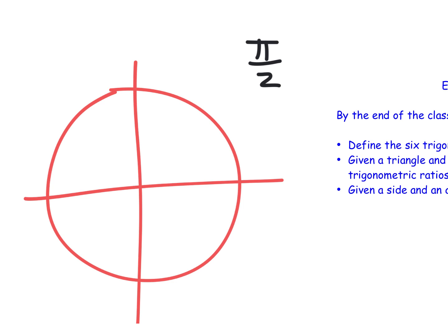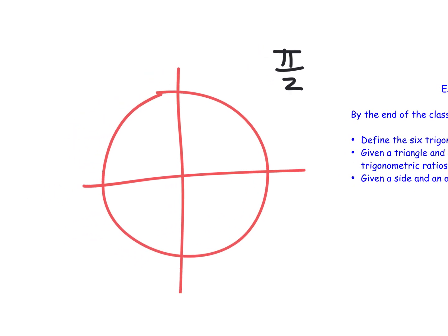First of all, I would say let's figure out where pi is. If you don't know where pi is by now, I have failed you as a teacher. Pi is there. You're supposed to be able to know that, and then figure out where pi over two would be. I think it's easier to think half of pi.